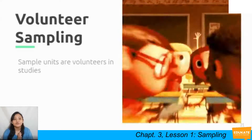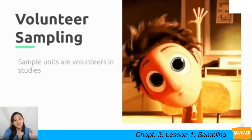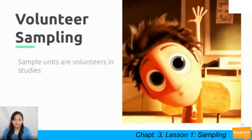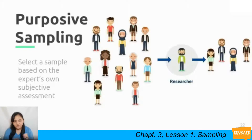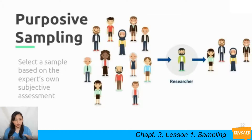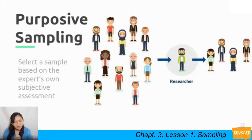Third is volunteer sampling — sample units are volunteers in studies. Fourth is purposive sampling, also one of the most common methods, where you select a sample based on the expert's or researcher's own subjective assessment. Purposive sampling is used when you have a specific purpose or specific characteristics to collect from the sample. The key distinction: what may be convenient to the researcher may not be purposeful, and what may be purposeful may not be convenient.